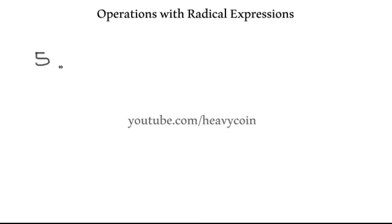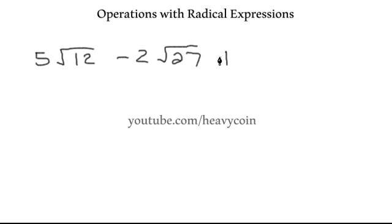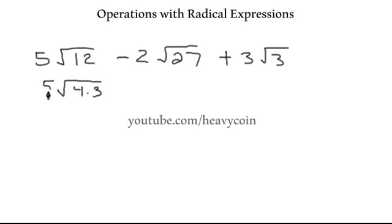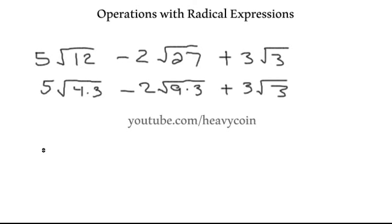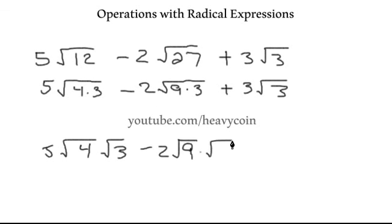This time we'll do one that's a little bit more difficult: 5 times the square root of 12 minus 2 times the square root of 27 plus 3 times the square root of 3. We're going to need to break this up. So this is the square root of 4 times 3, minus the square root of 9 times 3. We can break that up as 5 times the square root of 4 times the square root of 3, minus 2 times the square root of 9 times the square root of 3, plus 3 times the square root of 3.